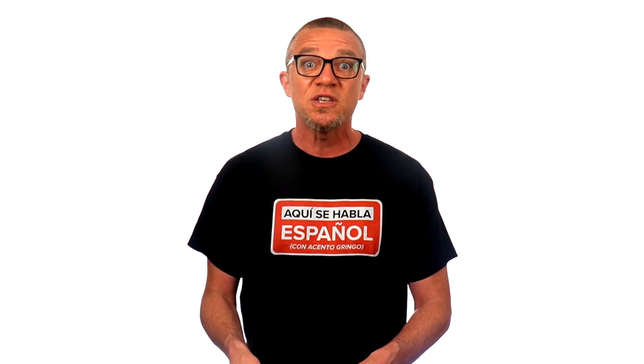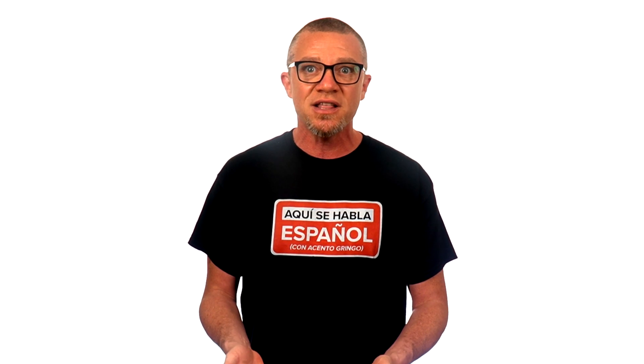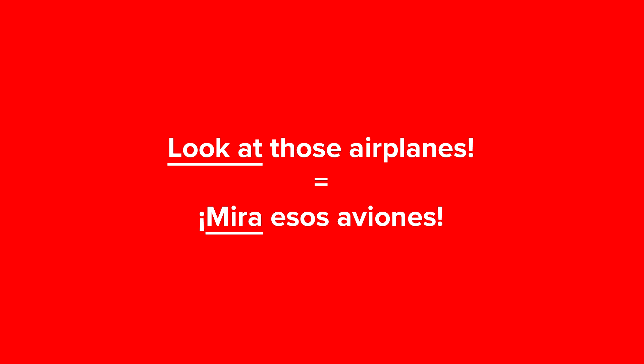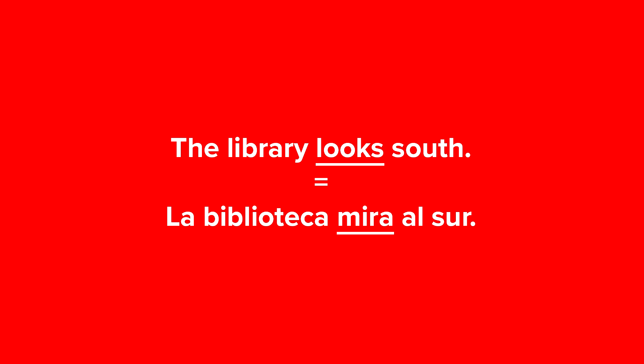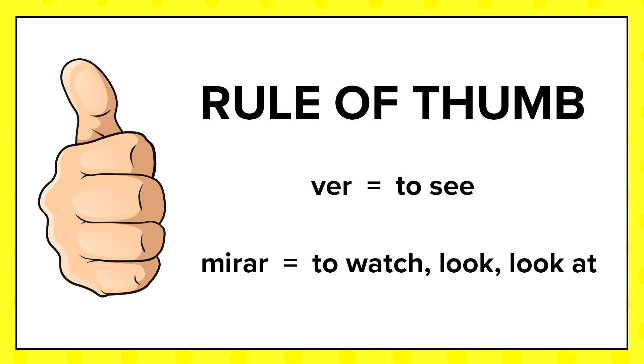One of the most common uses of mirar is when telling somebody to pay attention to something. We do the same in English with 'to look' and 'to look at.' Like: 'Look at those airplanes' — Mira esos aviones. Here's a completely different context: 'The library looks south' — La biblioteca mira al sur. This is talking about looking as in orientation — it basically means 'the library faces south.' Even though this is a different kind of 'look,' they still say mirar. That's just a taste of how ver and mirar can be used. In Spanish, by default, they say ver when we say 'to see,' and by default they say mirar when we say 'to watch,' 'to look,' or 'to look at.'